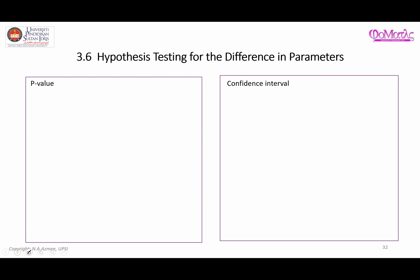For the p-value approach, recall that the first step is similar to the traditional step, which is to write down the null hypothesis and the alternative hypothesis. H-null is mu_B minus mu_M equals 0, and H1 is mu_B minus mu_M not equal to 0. So that is the first step.